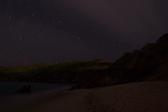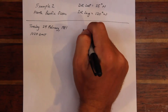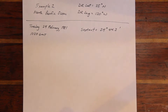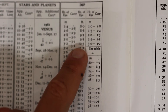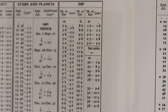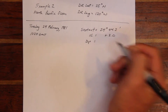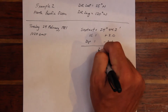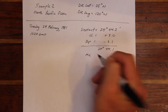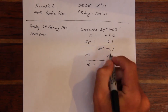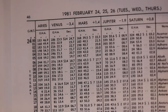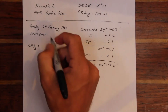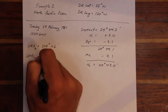Let's take a look at a second example problem. In this case, the sextant altitude is 24 degrees and 44.2 minutes. We apply our index correction — which is off the arc in this case — and the dip correction to come up with our apparent altitude. We'll apply our apparent altitude correction to the stars and planets table, not the sun table. After all corrections, the observed altitude is 24 degrees and 42.0 minutes.